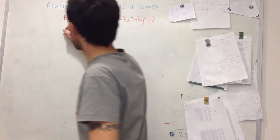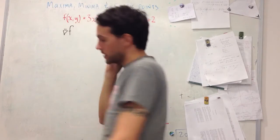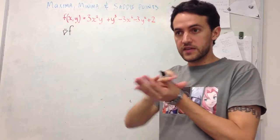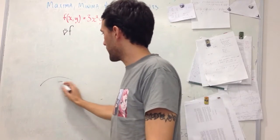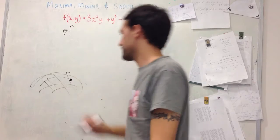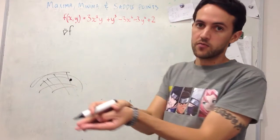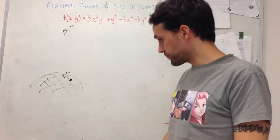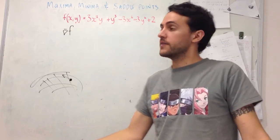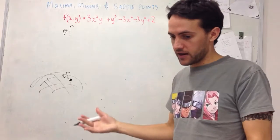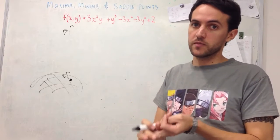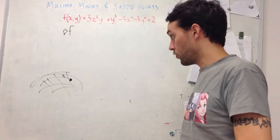The first thing we want to do is find our nabla f. The reason why nabla f is useful — remember, nabla f points in the direction of the steepest gradient. So given any point on a surface, the direction of nabla f at that point gives us the highest gradient. So if nabla f is zero — a zero vector — then that means the maximum gradient it can be is level, and so therefore that must be one of these special points: either a local maximum, local minimum, or a saddle point.